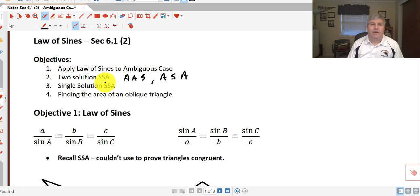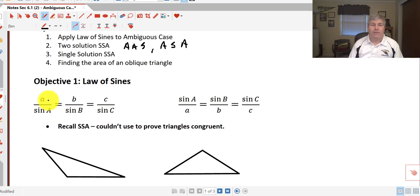The other objective of this video is to find the area of an oblique triangle. Recall that the law of sines was written: side A over sine of A equals side B over sine of B equals side C over sine of C. We could reverse that as well, where we do the sine of the angle over the corresponding opposite side.